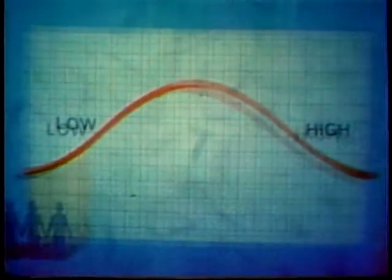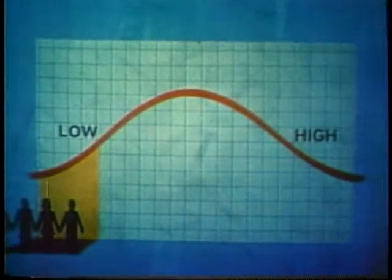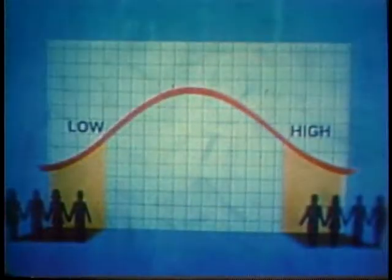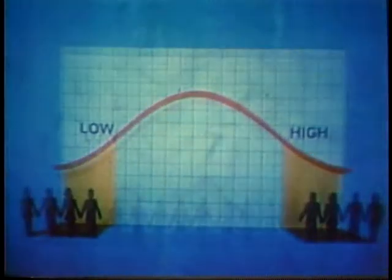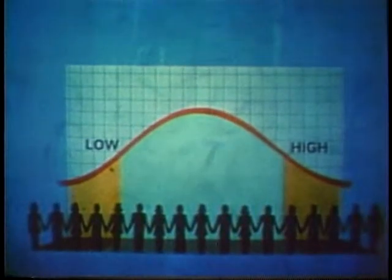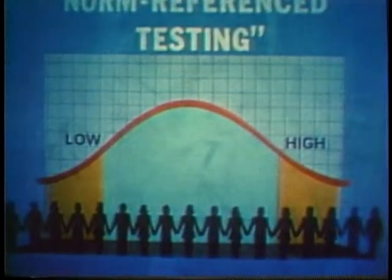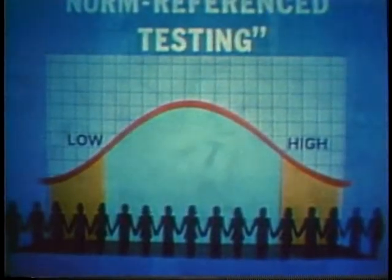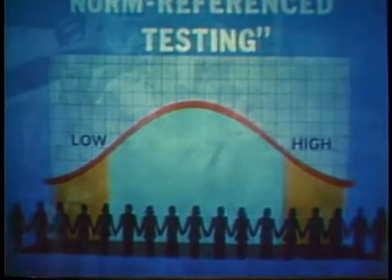A few students fail, and about the same number make a high grade. But most fall somewhere in between. This concept, known as norm-reference testing, dates back to the turn of the century.